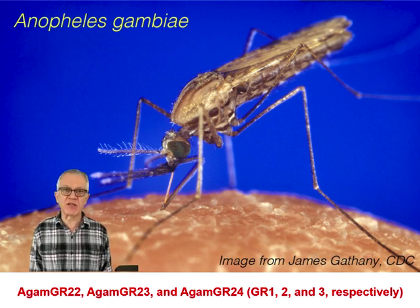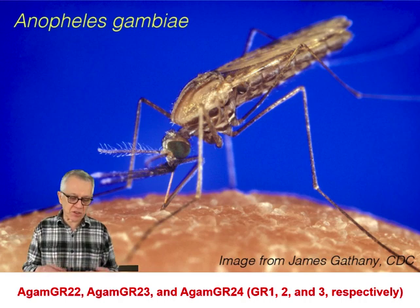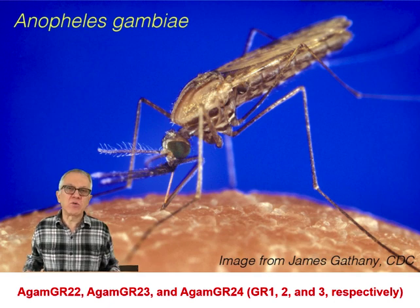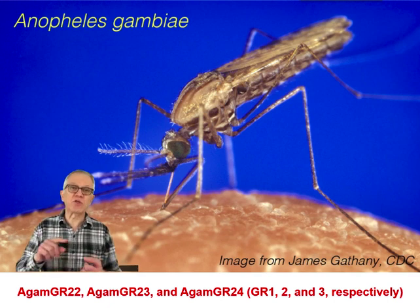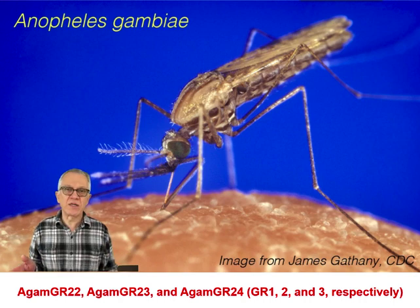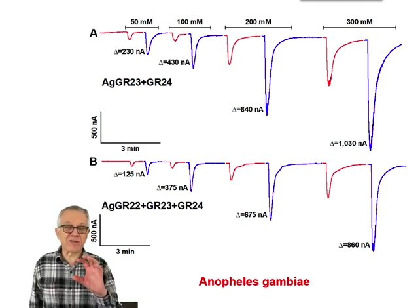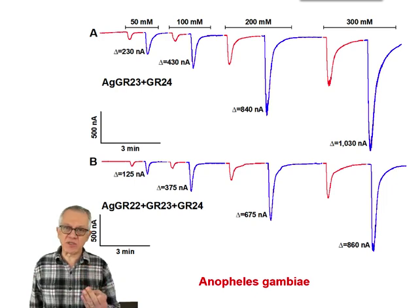In Anopheles gambiae, the receptors are named differently — they are named AgGR22, GR23, and GR24, which correspond to GR1, GR2, and GR3 respectively. Because the Anopheles genome was sequenced first, that nomenclature was kept, but for the Culex and Aedes aegypti genomes, sequenced later, the nomenclature 1, 2, and 3 is used. So when I talk about GR1 in Culex, it is equivalent to GR22 in Anopheles gambiae.